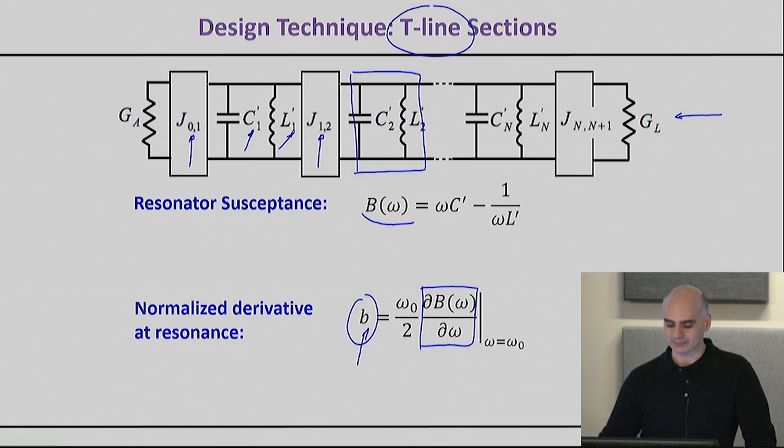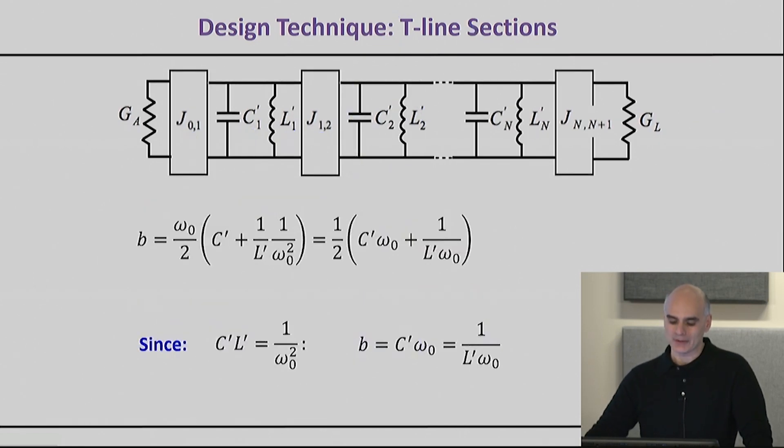For example, for the lumped element resonators that you see right here, that b is given right here. Considering that LC is equal to 1 over ω₀ squared, the b has a very simple expression: either the capacitance times ω₀, or 1 over inductance times ω₀.